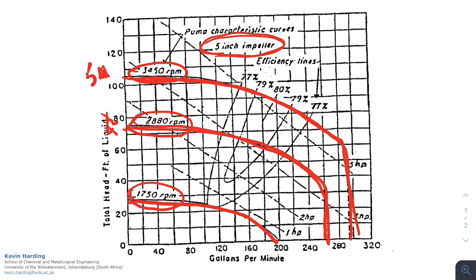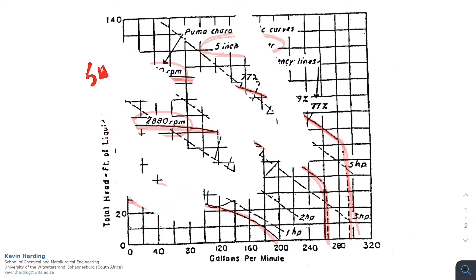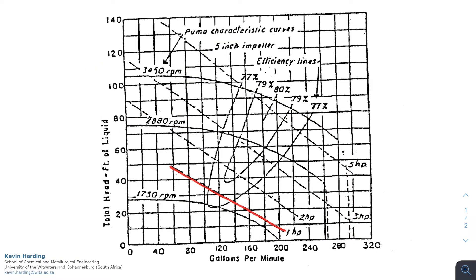Again we can also see on this one that we have the horsepower values. There's one, there's two, three, I've missed it slightly, and there's five for the horsepower. And again we also have the efficiency. This pump is slightly more efficient - we have 80, 79, and 77 efficiency.